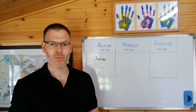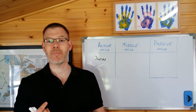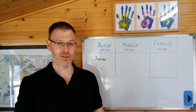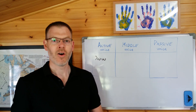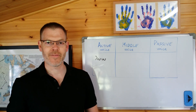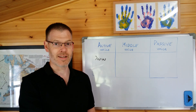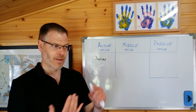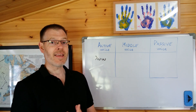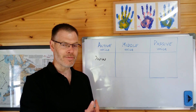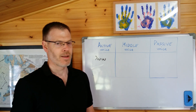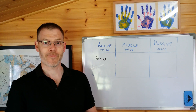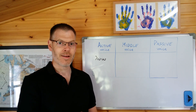Specifically, the middle voice was used in three instances. It was used when a verb which could normally be used transitively was used intransitively. Or it was used when a verb was used causatively or reflexively. So: normally transitive but intransitive — middle voice; causative — middle voice; reflexive — middle voice.